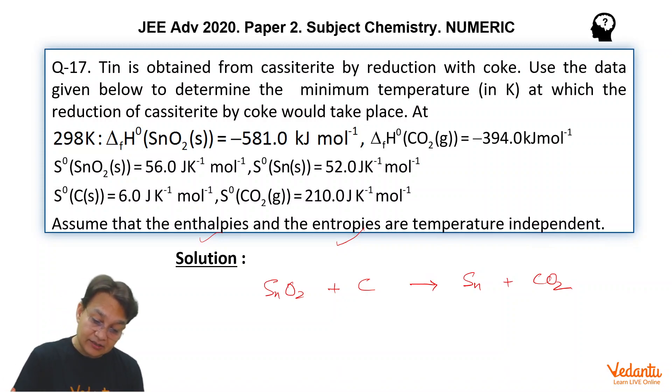As you can see, the enthalpy of formation, delta HF0 of Sn will be 0, delta HF0 of C will also be 0. It is not given in the data, you can check it out. Why? Because they are elements and elements in the most stable state will have delta HF0 equals 0. Also, it is not mentioned here that coke is in graphite form, but you will have to take that this carbon is in graphite form because only for graphite, which is the most stable state of carbon, we take delta HF0 equals 0. These things have to be kept in mind while solving the problem.